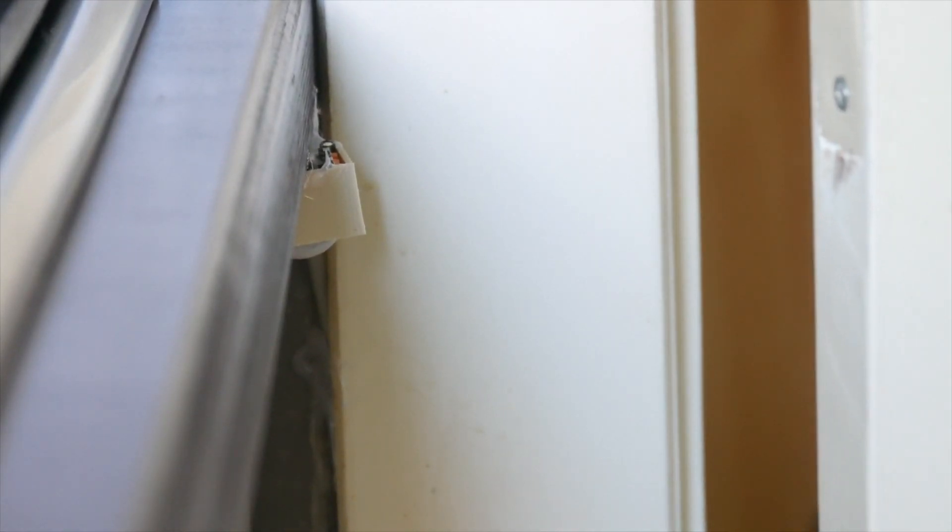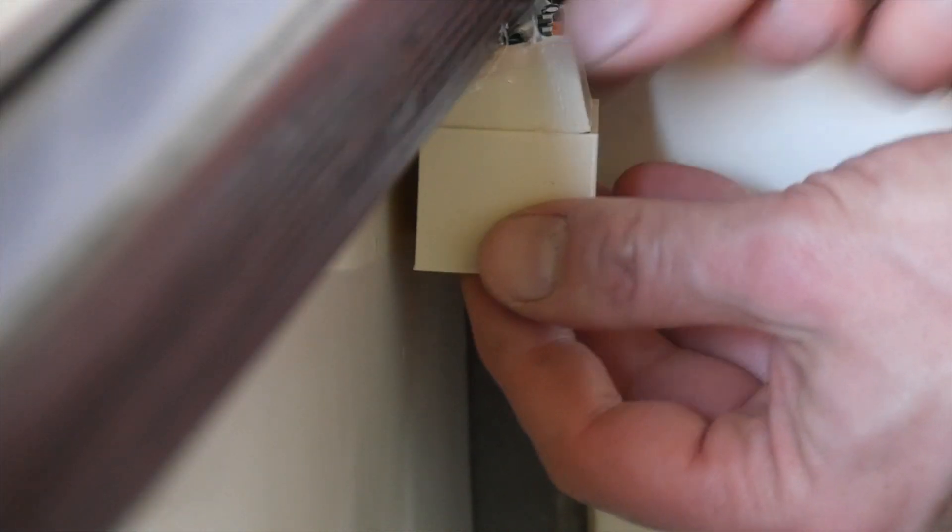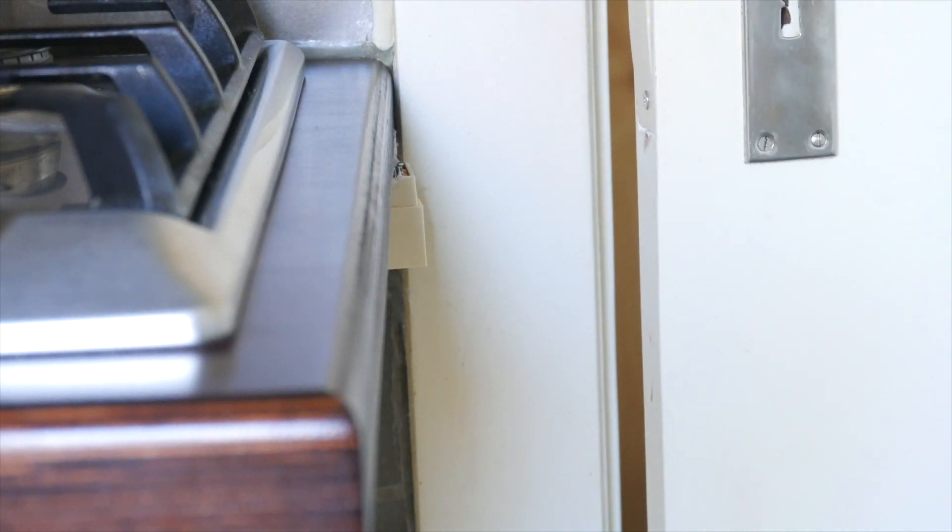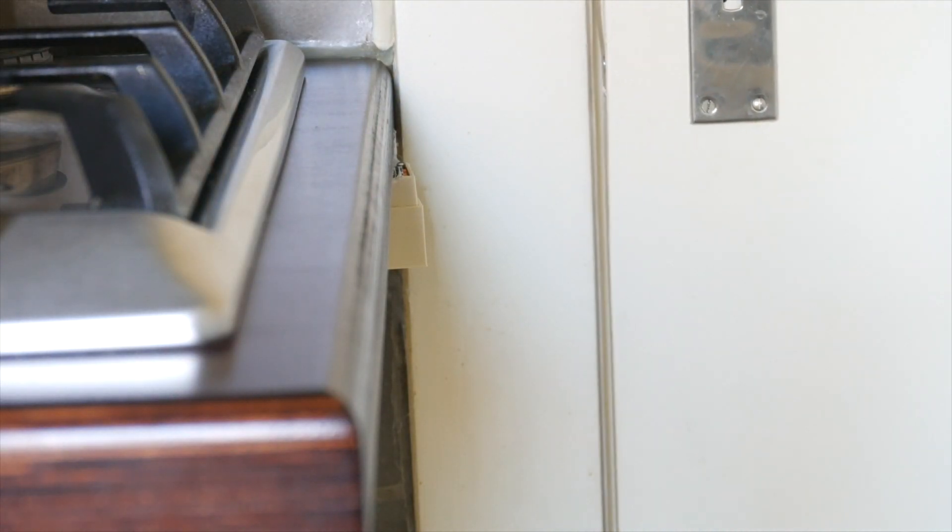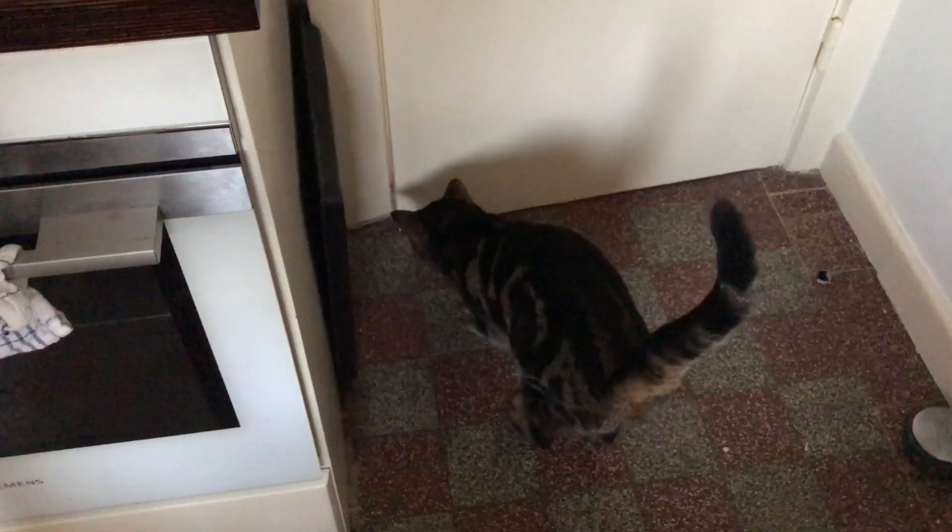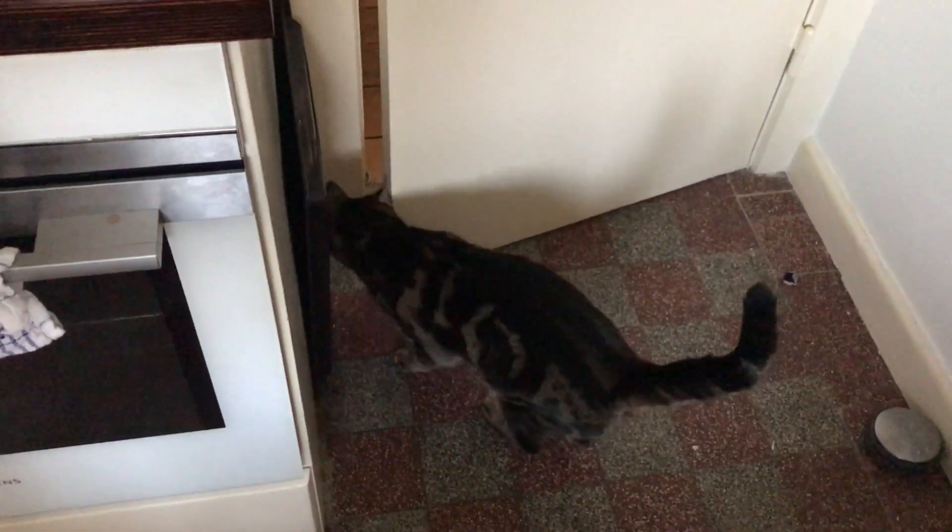In principle it works, but the motion detector outside the pantry interprets the closing door as movement and reopens it directly. So it gets blinkers to limit the angle of vision and now the cat can leave whenever he likes.